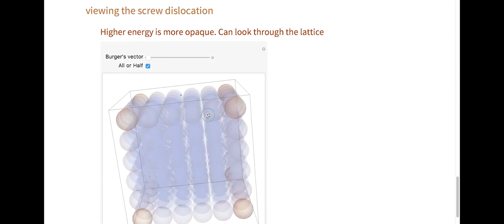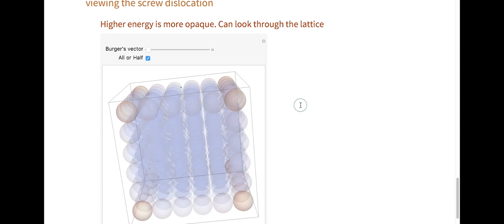The only thing is, it's kind of hard to see how the inner atoms' energies change. So what I've done below is I've created a simulation where the higher the energy, the more opaque the atom. So we start with a pretty translucent lattice because everything is lower energy.